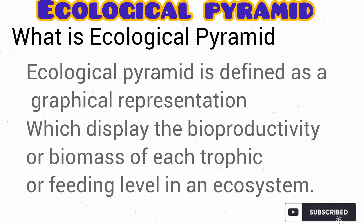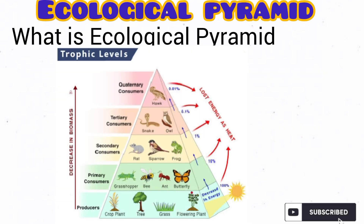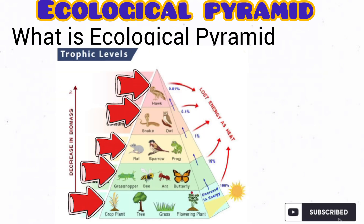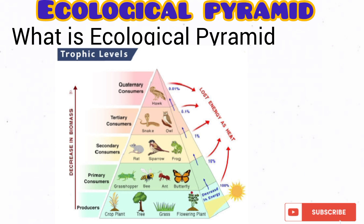What do you understand by the term ecological pyramid? It's actually defined as a graphical representation which displays the biomass or bioproductivity of each trophic or feeding level in an ecosystem. Please remember to watch my previous video on trophic levels so that you understand this better. This diagram shows all the trophic levels in an ecosystem in a graphical manner. This presentation of various trophic levels in an ecosystem in a graphical manner is termed ecological pyramid.